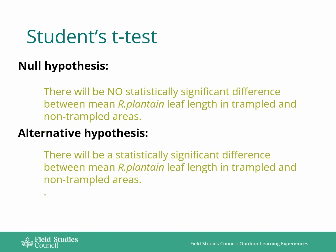This means that if our t-test allows us to reject our null hypothesis, then we have to accept that there is a statistically significant difference between the two data sets.